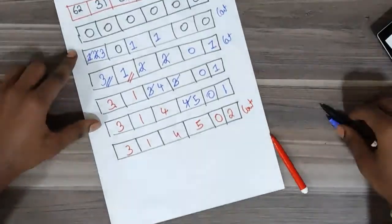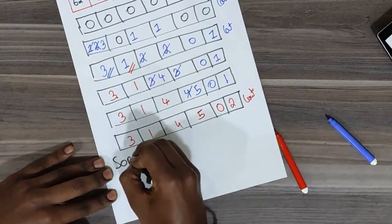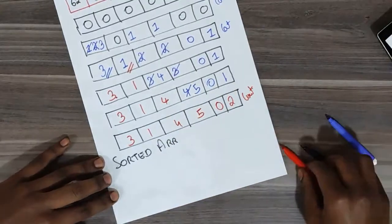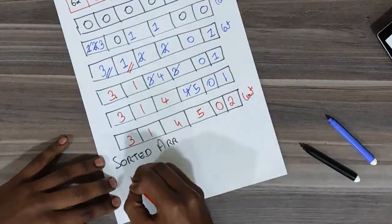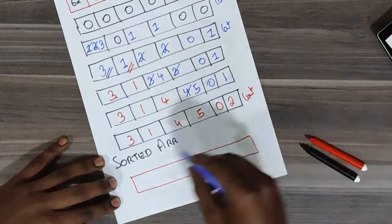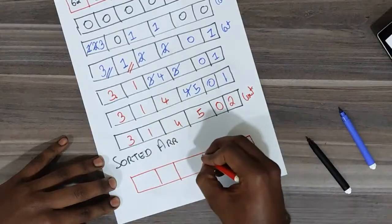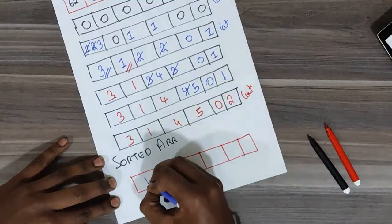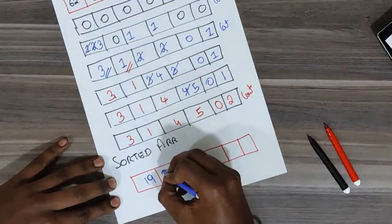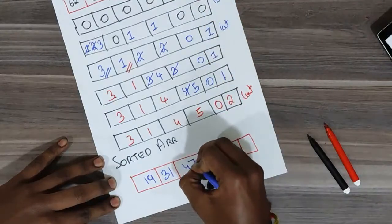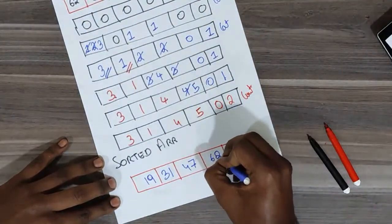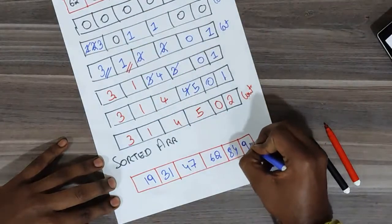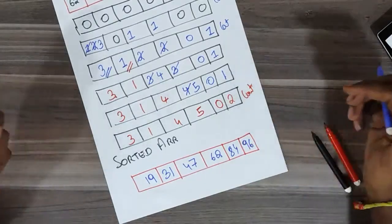Now the sorted array is constructed using these count values. Since 19 got count 0, it goes to index 0; 31 got count 1, so it goes to index 1; 47 got count 2, so it goes to index 2; 62 got count 3, so it goes to index 3; 84 got count 4, so it goes to index 4; and 96 got count 5, so it goes to index 5. This is the sorted array.